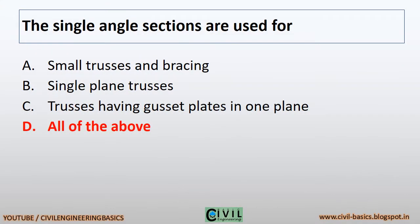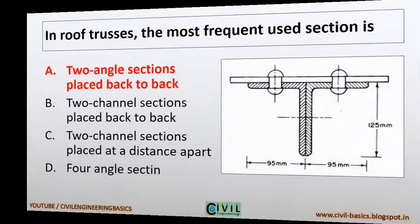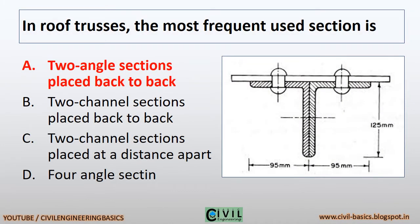Single angle sections are used for small trusses and bracing, single plane trusses, trusses having gusset plates in one plane — all of the above. In roof trusses, the most frequently used section is two angle sections placed back to back, as seen in the diagram shown.